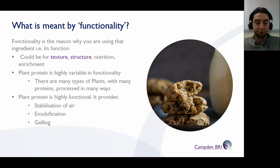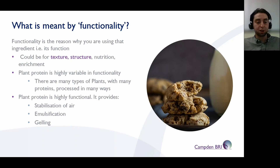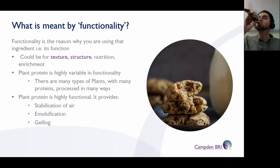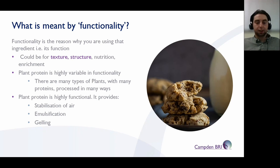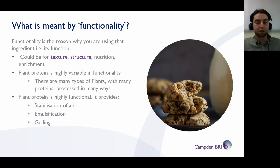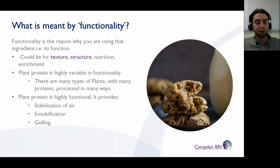Plant protein, very similar to egg, is highly functional. However, unlike egg, not all plant proteins can provide all of these functionalities in one ingredient like egg can. Stabilization of air — so foaming. Common examples include aquafaba, which is a very common one used to make meringues, used in baking products, and even in things like cocktails to make the white foam you would get with egg white on the top.